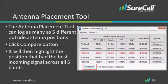The antenna placement tool can log as many as five different outside antenna positions. Once you have logged five potential donor antenna locations, click the Compare button. The antenna placement tool will then highlight the position that had the best incoming signal across all five bands.